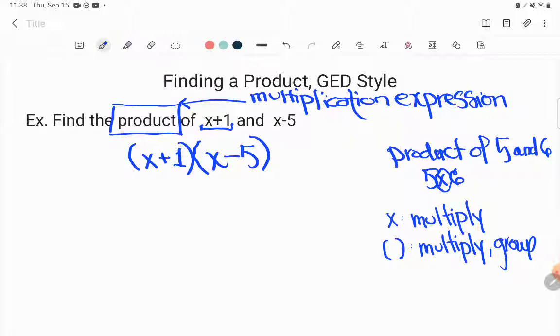Multiplication passes out. So if I want this entire group to multiply with this entire group, that means that every term, every number adding and subtracting, so the x and the plus one, is going to multiply with every term, every number adding or subtracting in the next parentheses, so x and minus five.